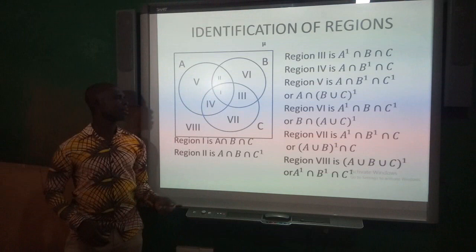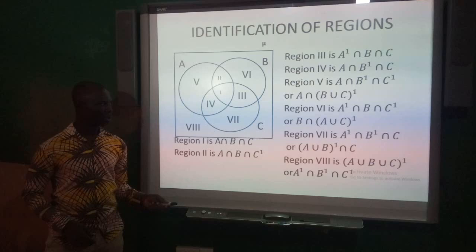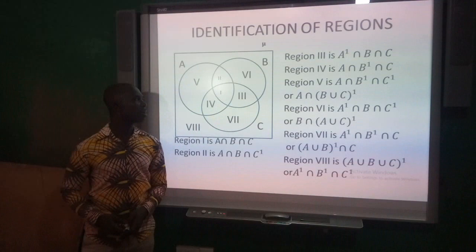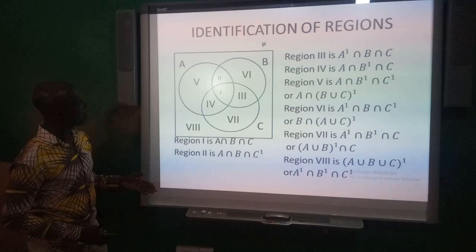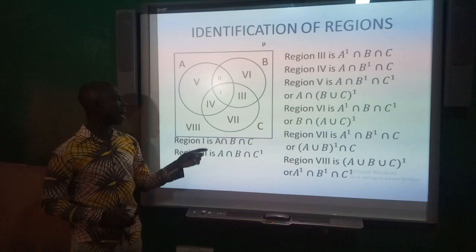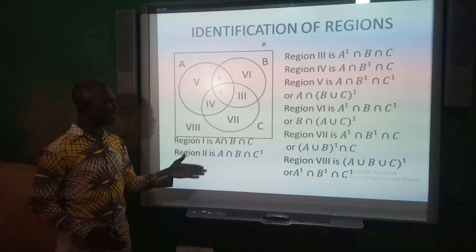If you add region I to region II, this will give you A intersection B. Region III is A complement intersection B intersection C. When we add region I to region III, this will give you B intersection C.